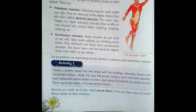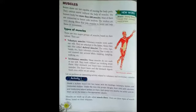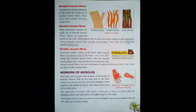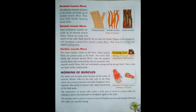Muscles are made up of cells called muscle fibers. There are three types of muscle fibers based on their structure: striated muscle fibers, smooth muscle fibers, and cardiac muscle fibers.